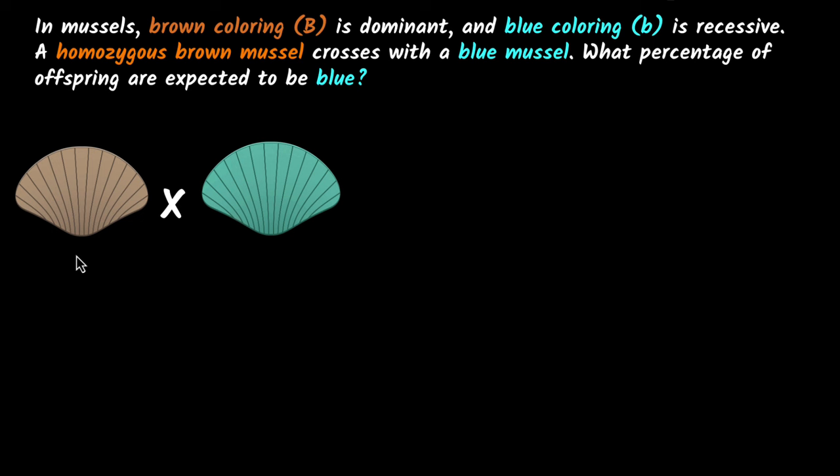Again, the first step is to try and figure out what the genotype is. I'm given that in mussels, it's given that a homozygous brown mussel. Since I'm given it's homozygous, both the alleles must be same, so brown mussel, so this must have both capital B, capital B. What about this one?